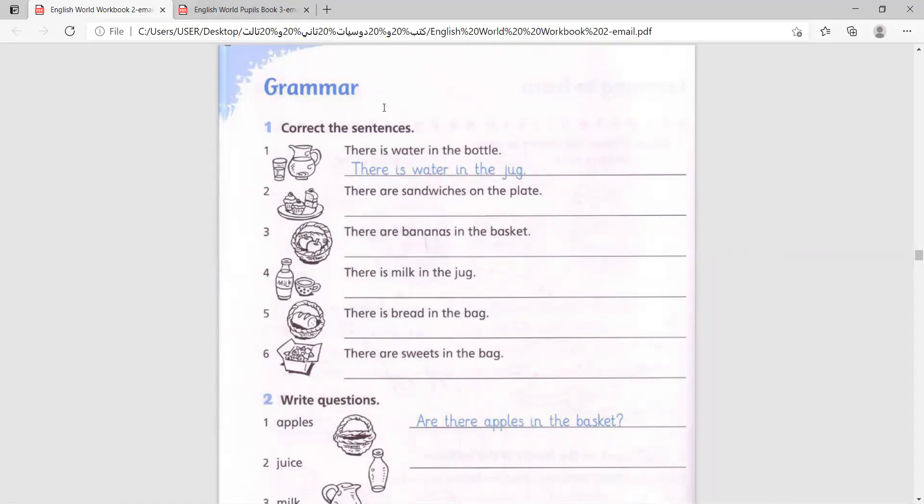Number two: there are sandwiches on the plate. Okay, are these sandwiches? No, we say there are cakes on the plate. Number three: there are bananas in the basket. Are those bananas? No, we say there are apples in the basket.